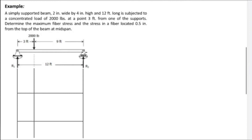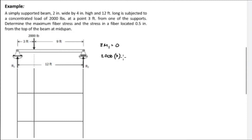We have reaction R1 at point 1 and reaction R2 at point 2. Taking the summation of moments at point 1 equal to zero: the 2,000-pound load acts at 3 feet from point 1, giving a clockwise moment, which is positive. Reaction R2 is assumed upward, producing a counterclockwise moment, which is negative, over the full 12-foot span.